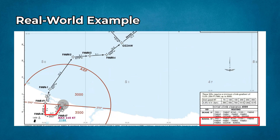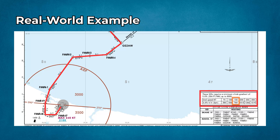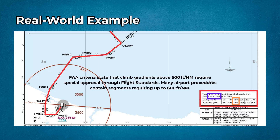Real-world examples: let's look at a real SID example — the McCall 1 Foxtrot SID at Istanbul Airport. It requires a 5.0% climb gradient along the SID. At a ground speed of 150 knots, a pilot must climb at roughly 760 feet per minute, equivalent to about 304 feet per nautical mile. FAA criteria state that climb gradients above 500 feet per nautical mile require special approval through flight standards. Many airport procedures contain segments requiring up to 600 feet per nautical mile.